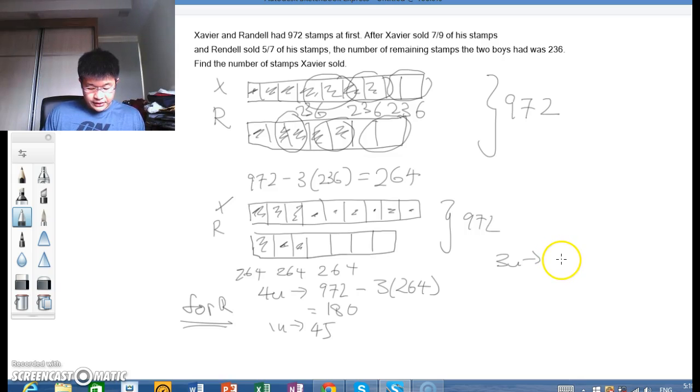To find these three units of Xavier: three units will be 219, because we take 264, subtract away 45, you get 219. One unit will be 73. And Xavier sold 7 units. So 7 units would be 511.